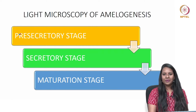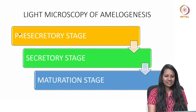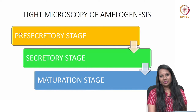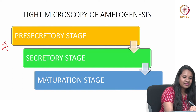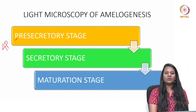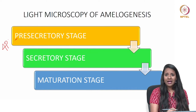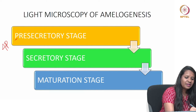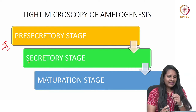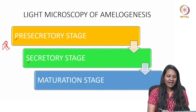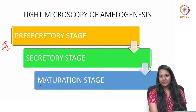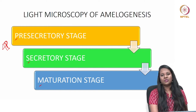Moving to the light microscopy of amelogenesis, which is broadly classified into pre-secretory, secretory, and maturation stages. In the pre-secretory stage, remember the four P's: the ameloblast will acquire phenotype, change polarity, develop a high protein-synthetic apparatus, and prepare to secrete the organic matrix. In the secretory stage, it elaborates and organizes the highly ordered tissue. In the maturative stage, it modulates and transfers ions so that concurrent accretion of mineral occurs.